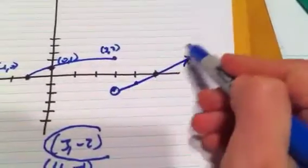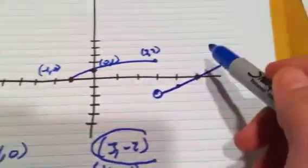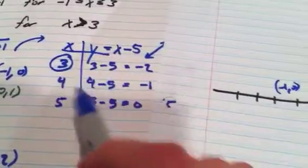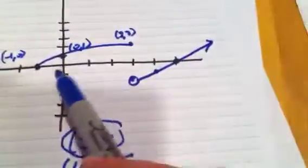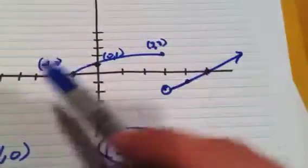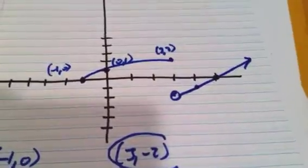So 3, negative 2, 4, negative 1, 5, 0. And that I was expecting just a line for that point. Just a line connecting those points, because that was x minus 5, and that's a line. So that final whole picture, that weird piecewise function, that's the graph.